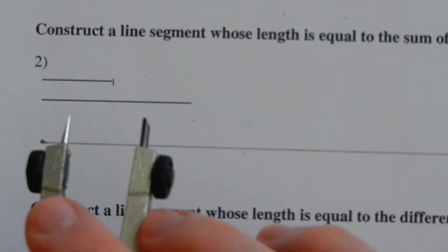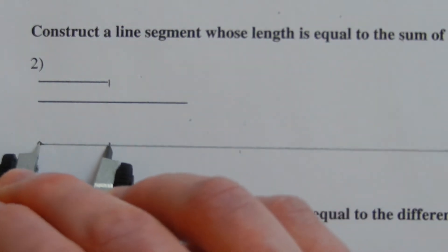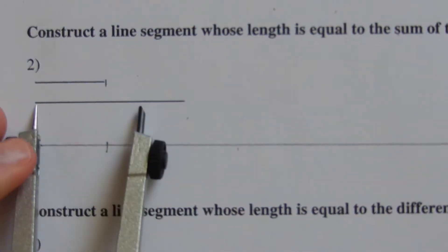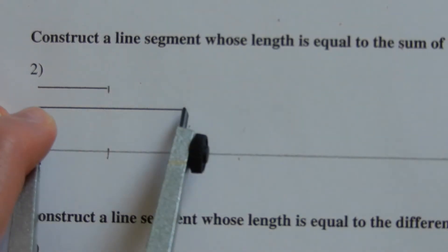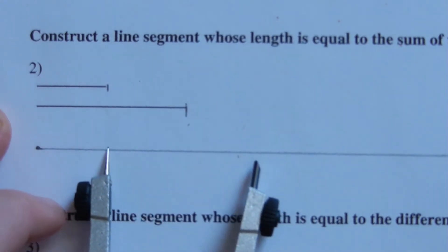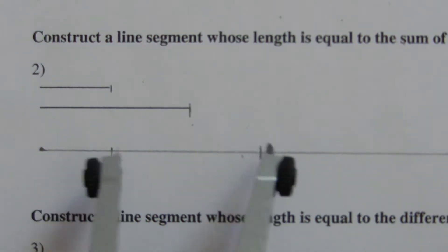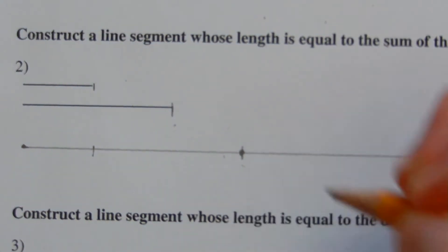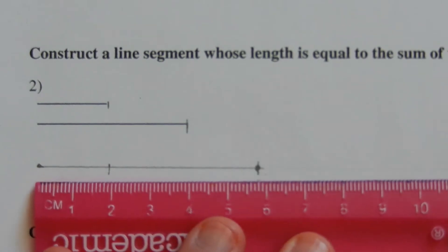This is the length of my first segment, so I'm going to place this on my drawn line's endpoint and mark it with my compass. Now I'm going to take the measurement of my next line by putting the endpoint of my compass on one point of that second line and extending to its other endpoint. I'll place that new measurement where my first measurement ended and make that mark.